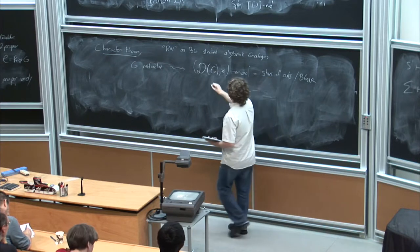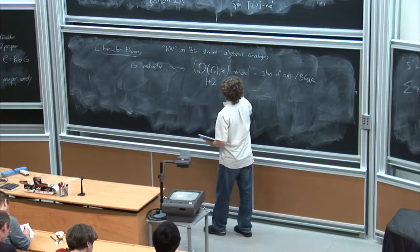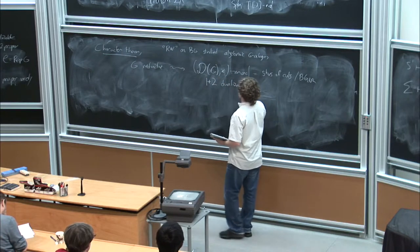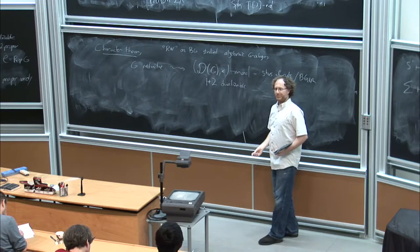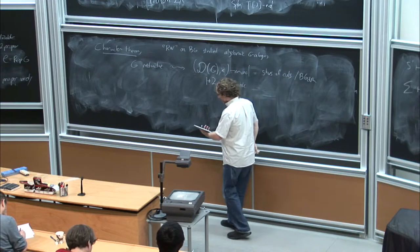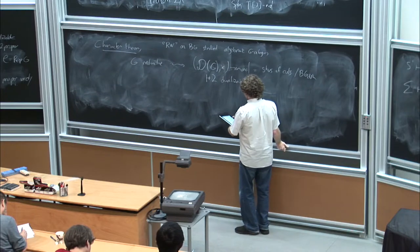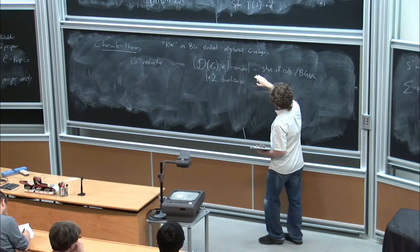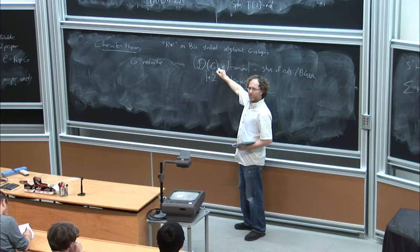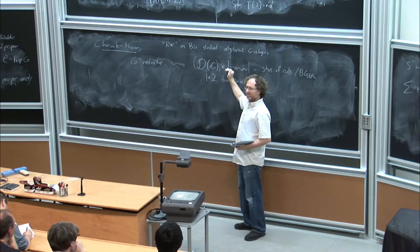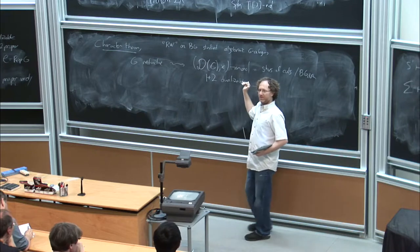A priori, I don't have any right to expect this thing to be 2 plus 1 dualizable like it was before. And in fact, it's not. This is only 1 plus 2 dualizable — it's trying to be a 3D field theory, it doesn't make it very far. We'll try to fix that. It's a monoidal category, so it's kind of an algebra. We said algebras are always 1-dualizable. This guy doesn't have a choice but to be 1-dualizable; it doesn't do anything better than what it has no choice to do.